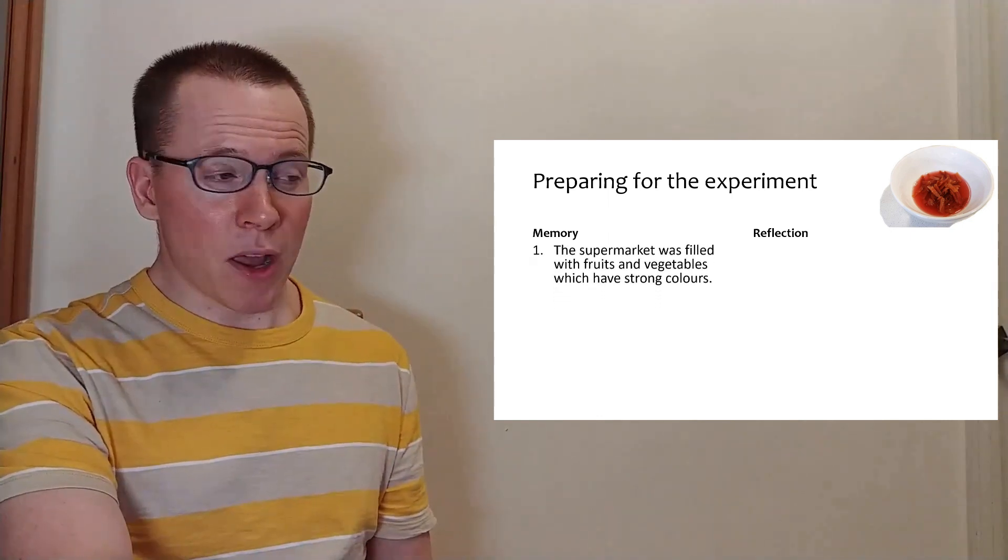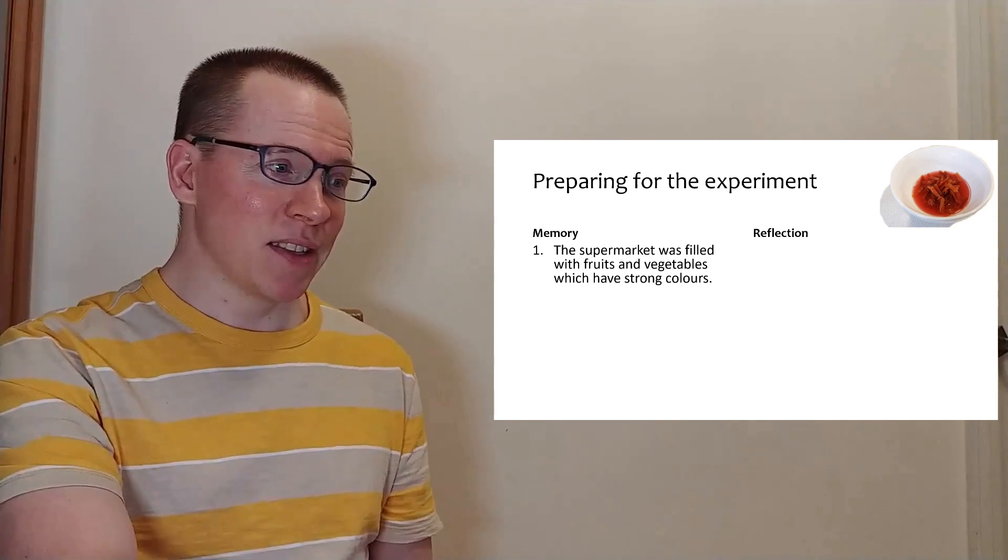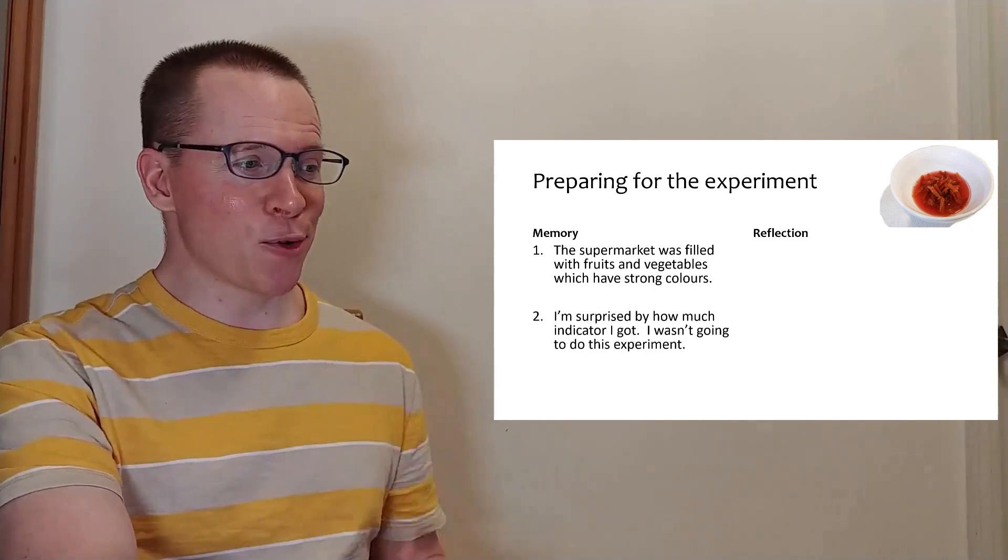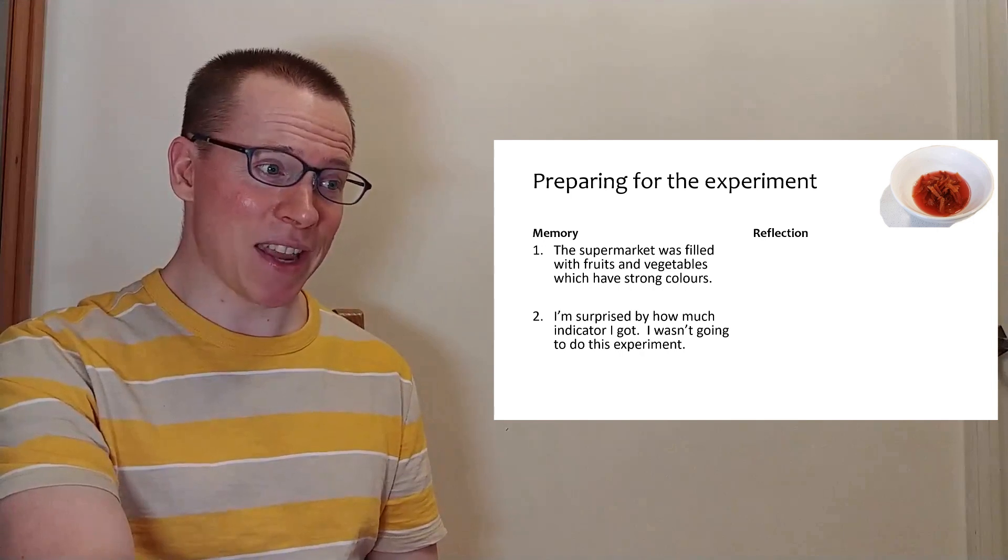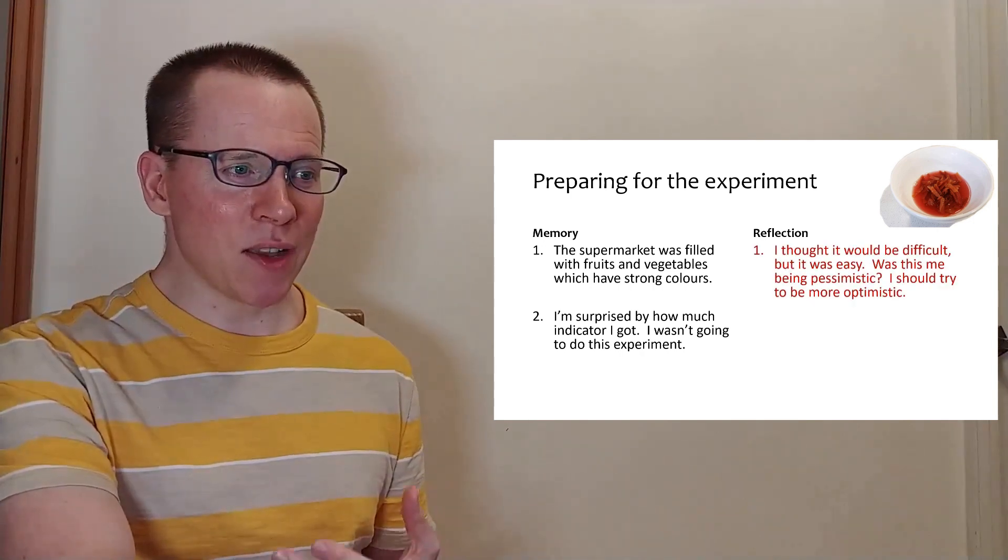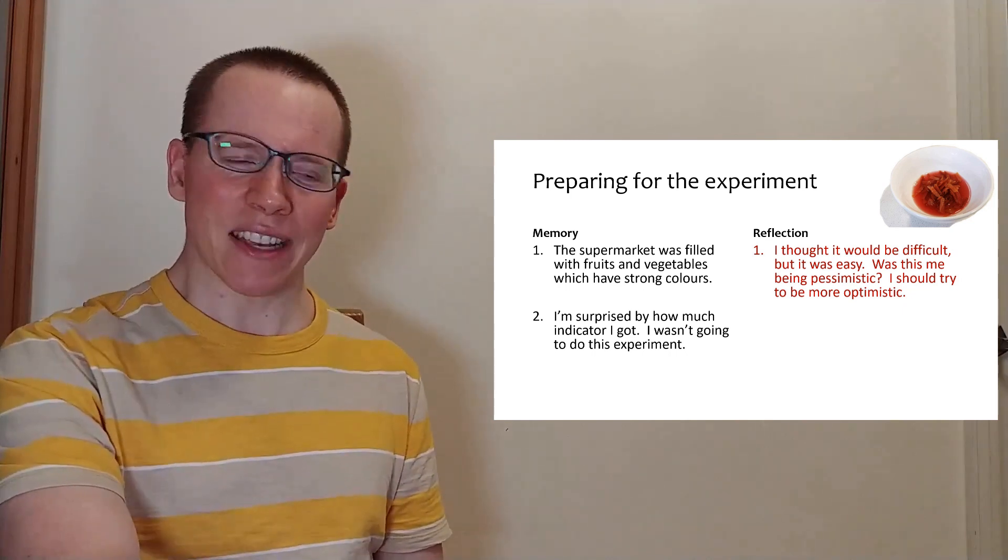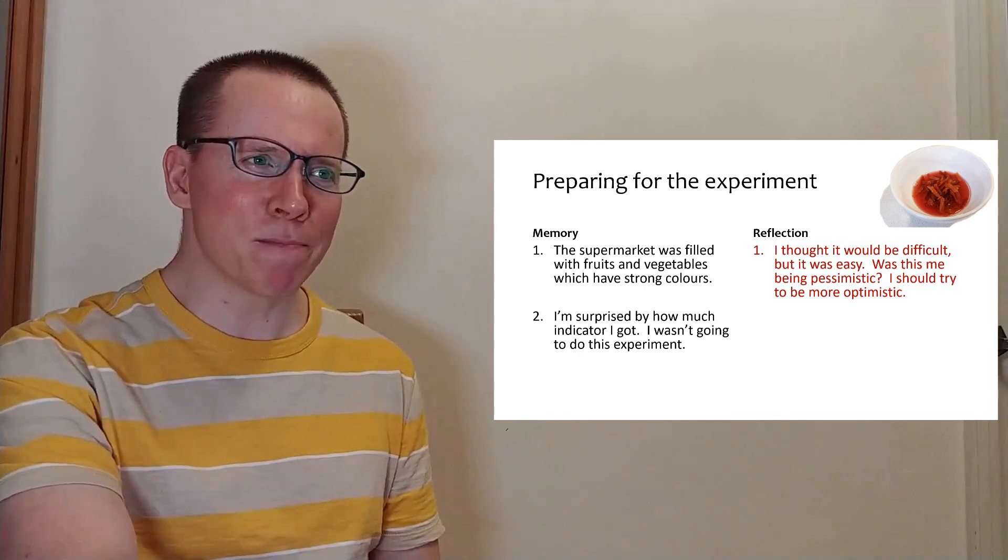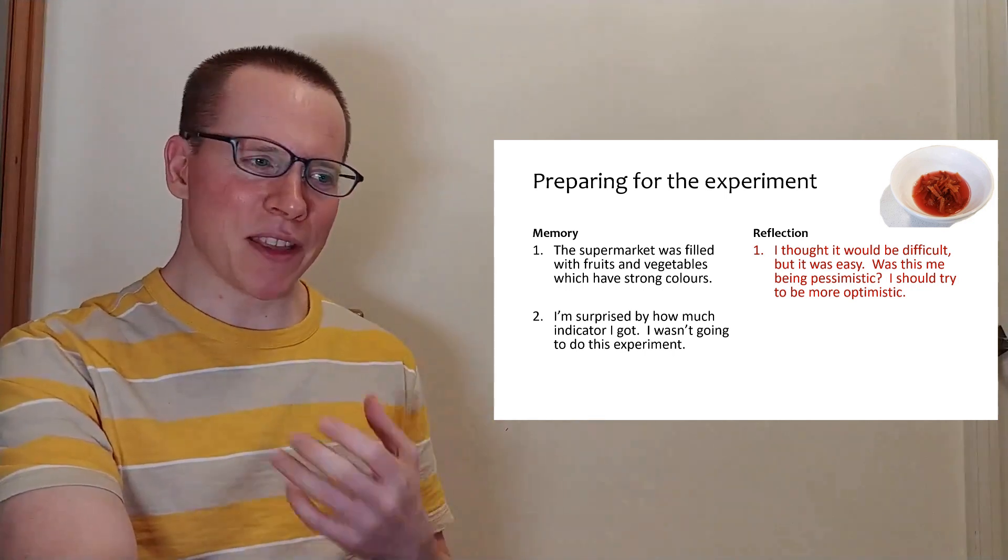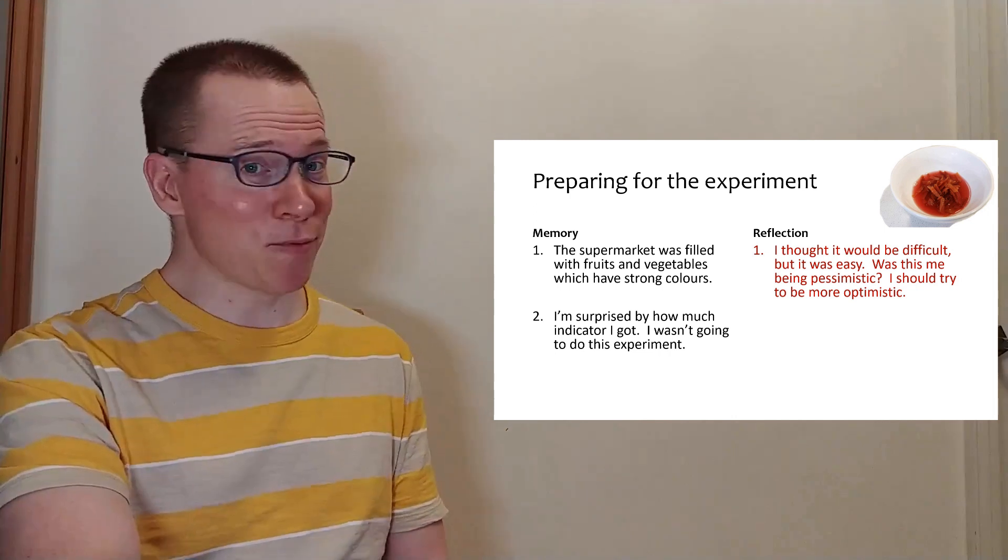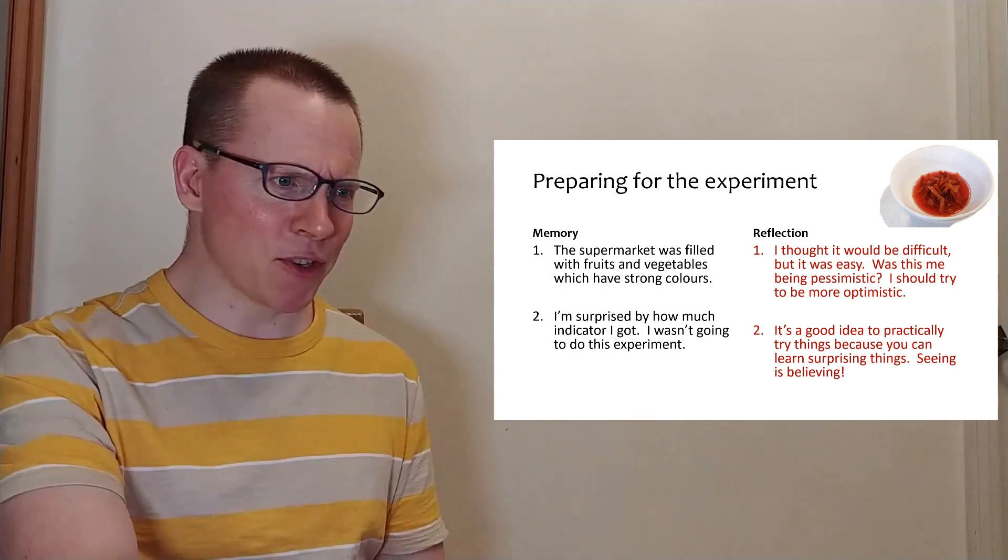So firstly, what I remember when I went to the supermarket, I saw lots of fruit and vegetables that have strong colors. And secondly, I also remember that I was surprised by how much indicator I got from one apple's skin. Before going to the supermarket, I thought it was going to be difficult to find some of these materials, but actually it was very easy. I think really this was me being quite pessimistic before I started. And I feel like this is reminding me that I should try to be more optimistic, because it really wasn't a difficult task.